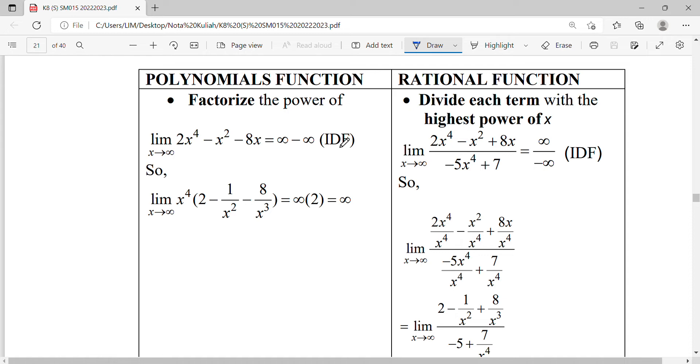In situations where we cannot calculate directly, you can factorize out the highest power or divide by the highest power. Infinity times this (1 over infinity is zero, 8 over infinity is also zero), so it will be infinity times two, giving you infinity.